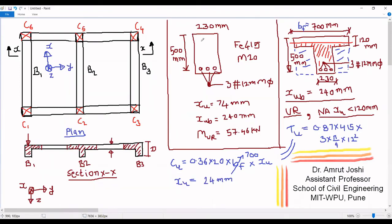Compare this XU with XU for the rectangular cross section of same effective depth and same steel — XU has dropped down by around 50 mm. Now compare XU = 24 mm with the neutral axis for balanced section, Xub = 240 mm. Since 24 mm is less than 240 mm, our first assumption is correct — the section is under-reinforced. Since 24 mm is also less than 120 mm, the slab depth, our second assumption is also correct — the neutral axis lies within the flange.